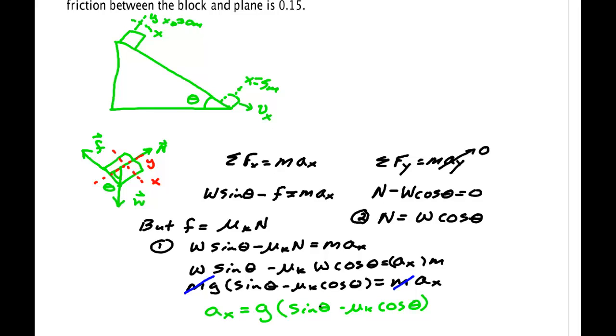g is a constant. Sine of theta, theta being 40 degrees is a constant. Minus 0.15 times the cosine of 40 degrees. These are all constants. So most importantly it's constant. And because it's constant that means that the kinematic equations are valid.